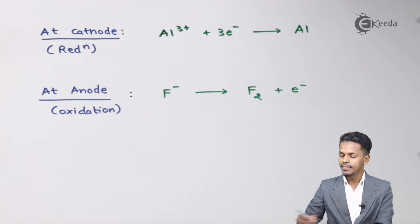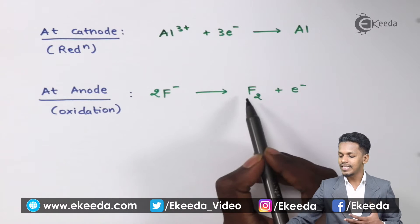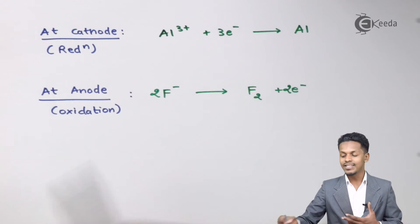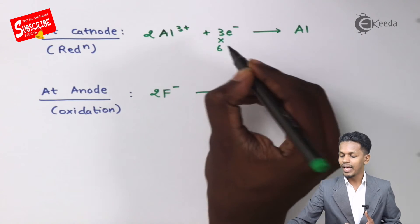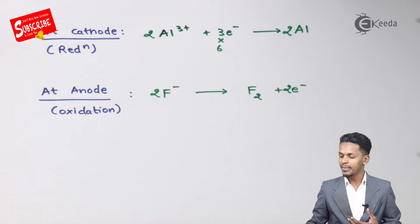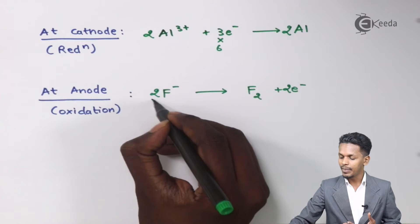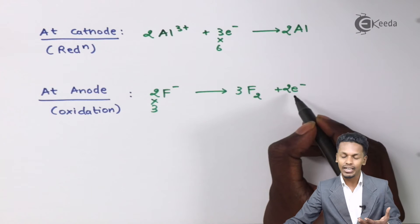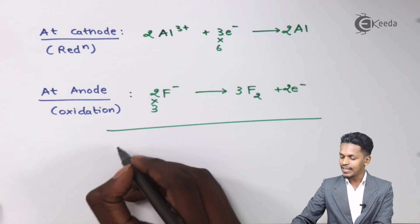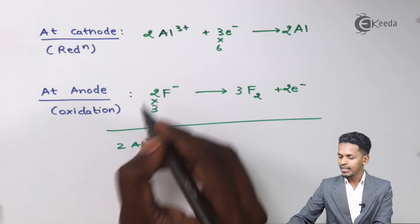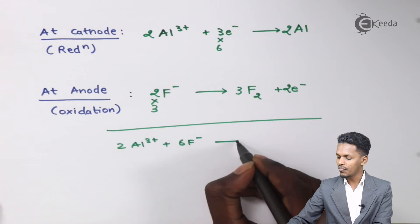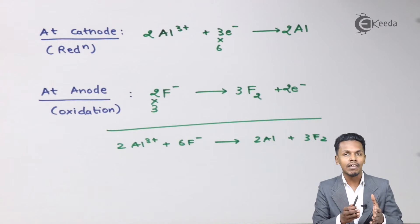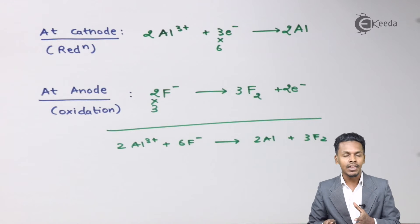Balancing the equation: 2F− gives F2 along with 2 electrons. Since there are 3 electrons at the cathode and 2 electrons at the anode, we multiply the cathode reaction by 2, giving 6 electrons and 2 moles of aluminum. We multiply the anode reaction by 3, so 6 moles of F− gives 3 moles of F2 along with 6 moles of electrons. The overall reaction is: 2Al3+ plus 6F− gives 2 moles of aluminum and 3 moles of F2. This aluminum is deposited on the cathode, the carbon lining on the iron container.